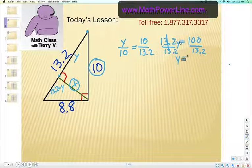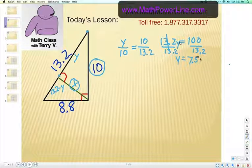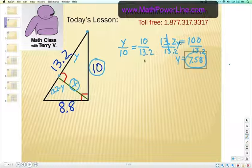So y equals 7.57 repeating. Let's go ahead and call it 7.58. Maybe we only need to go to one place, but let's stick with that. So this part right here is 7.58.